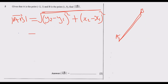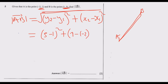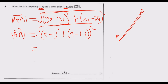Let's call B point two and A point one. The y-values give us (5 minus 1), squared. The x-values give us (1 minus negative 2), squared. After squaring: 5 minus 1 is 4, and 4 squared is 16.